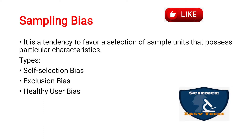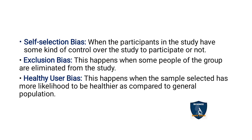Sampling bias is the tendency to favor a selection of sampling units that possess particular characteristics. Even when taking samples based on particular characteristics, sampling bias may still occur. The types of sampling bias are: self selection bias, exclusion bias, and healthy user bias.